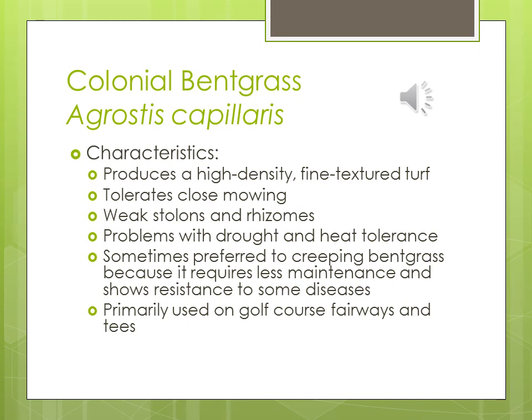Colonial bentgrass: produces high density, fine texture turf. Tolerates close mowings but has weak stolons and rhizomes. Has problems with drought and heat tolerance. Sometimes preferred over creeping bentgrass because it requires less maintenance and shows resistance to some diseases. Primarily used on golf course fairways and tees — probably not on greens, as creeping bentgrass is the standard for the high-quality putting surface.